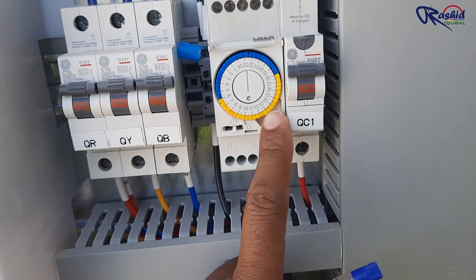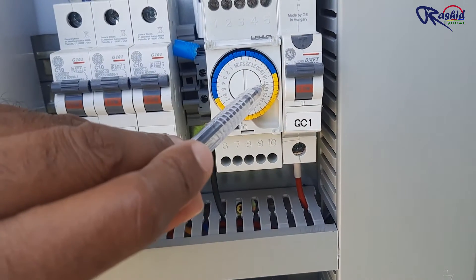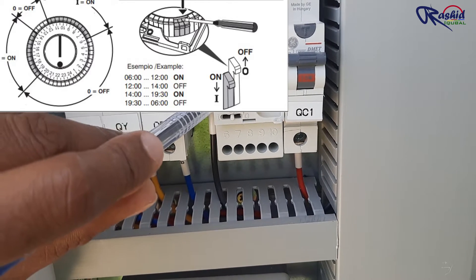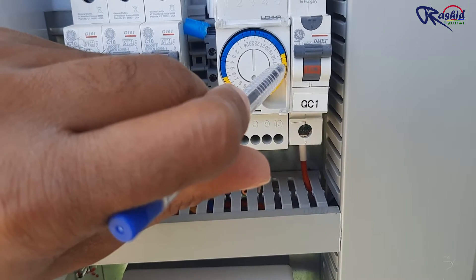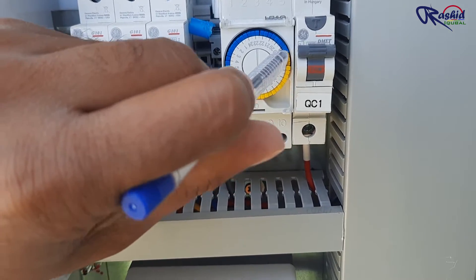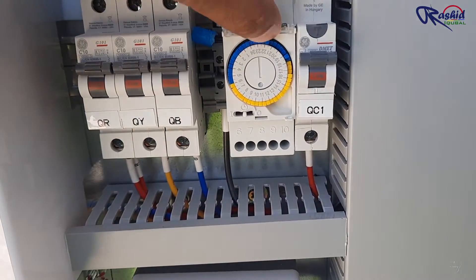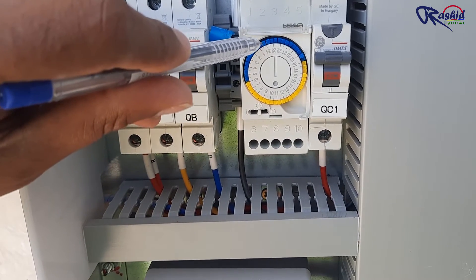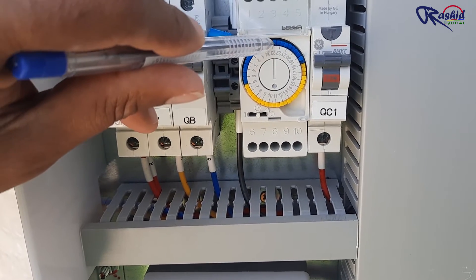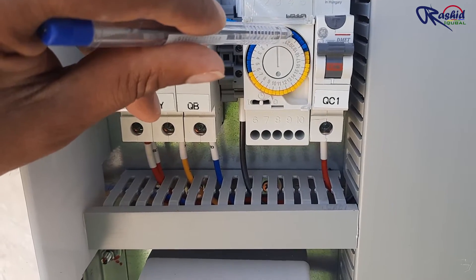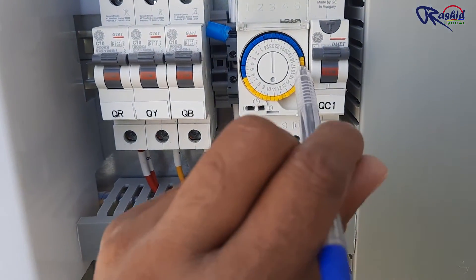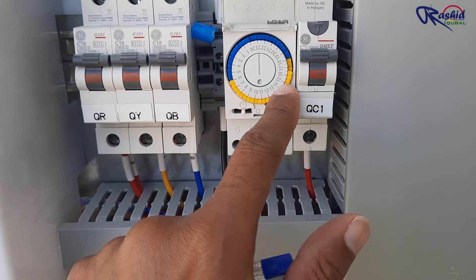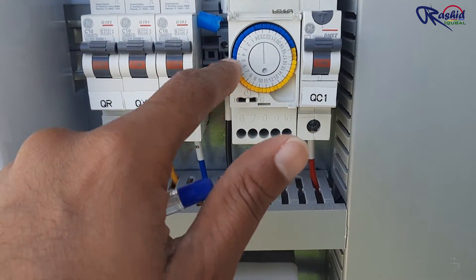Now I am going to set up the switch on and off time for the street light. We can push or pull up these pins — if you pull a pin up the timer is off, and if you push it down the timer is on. I want to turn on the light at 5 pm until 6 am in the morning, so I need to push the pins from 17 to 6. When the feeder pillar is energized, the timer's round shape starts rotating like a clock. Once the pushed pin reaches the arrow, the timer will activate and give a signal to the MCB to energize the outgoing circuit.